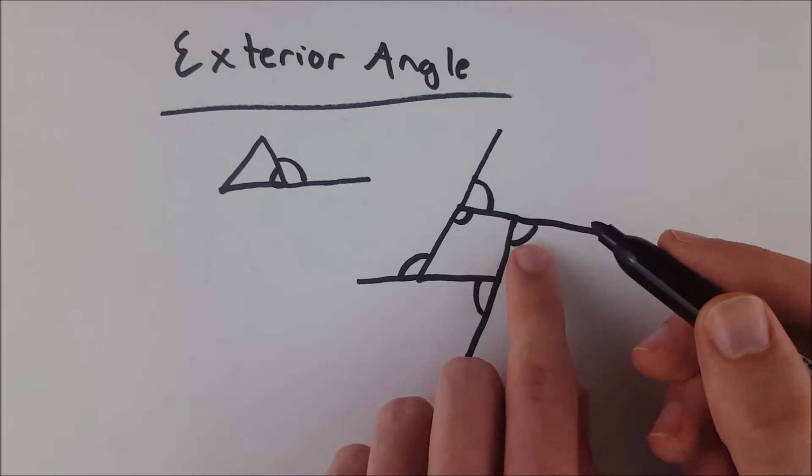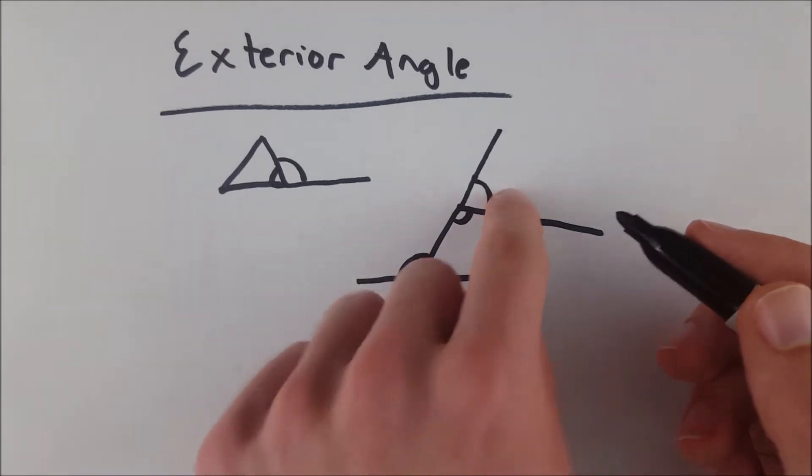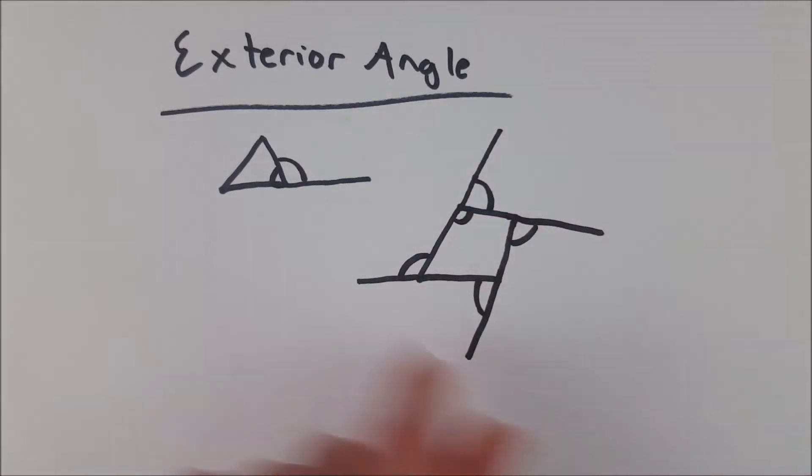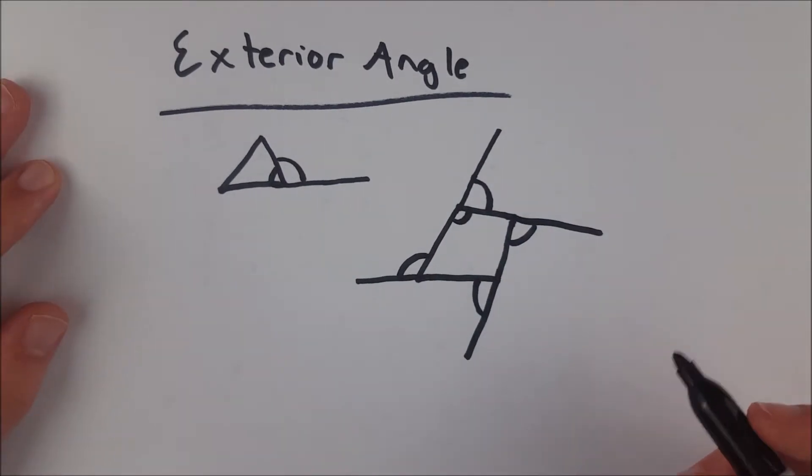But the measure of this angle, plus this one, plus this one, plus this one, it's 360 degrees. You add up all the angles, you would get 360 degrees.